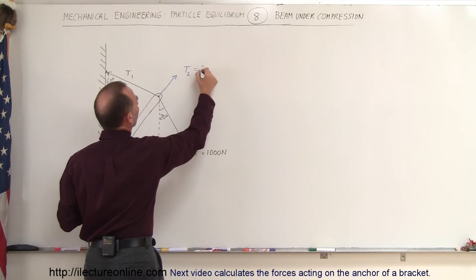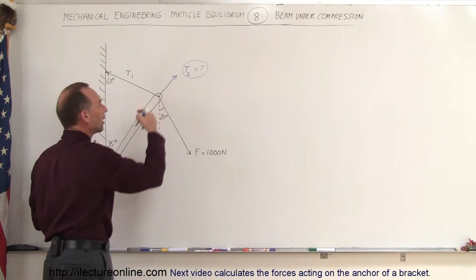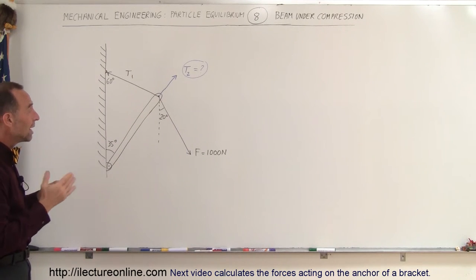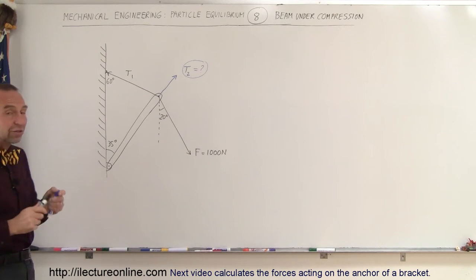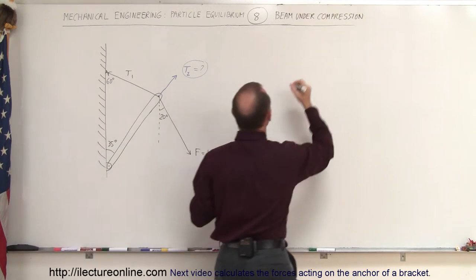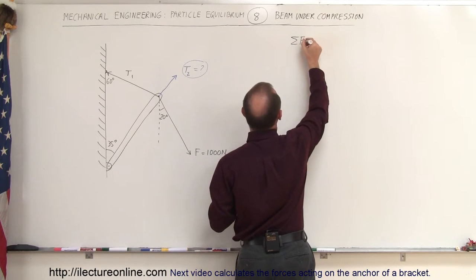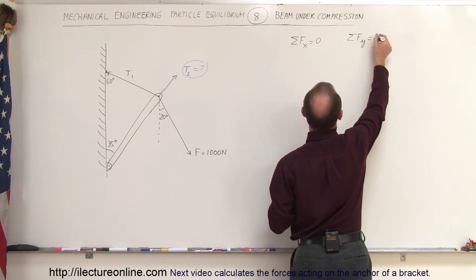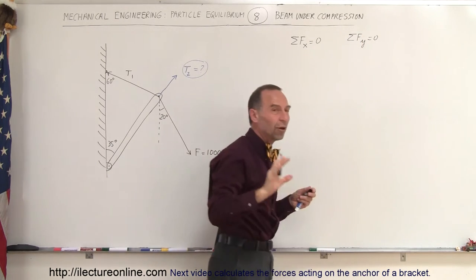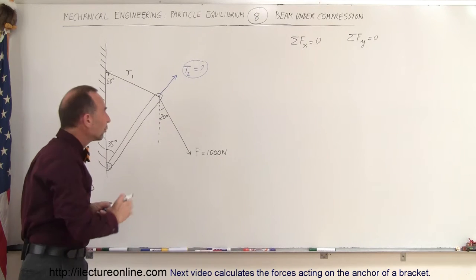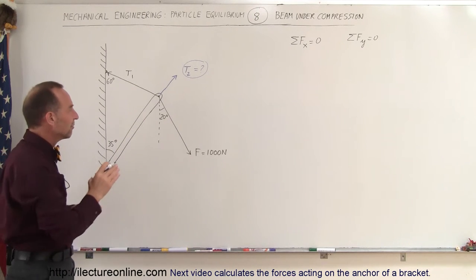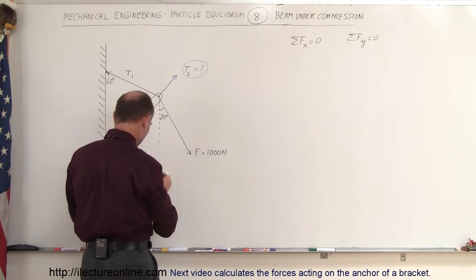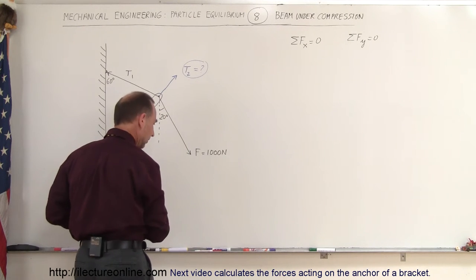The question is: how much force is acting on the beam based upon these two forces? In order to figure that out, we have to add up all the forces in the x direction and the y direction. Since it's a static situation, the sum of all forces in the x direction equals zero and the sum of all forces in the y direction equals zero. We'll use those two equations to solve for the unknown. First, we need to find the x and y components of each of the three forces.